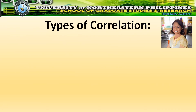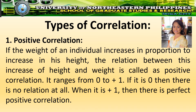What are the types of correlation? First, positive correlation. If the weight of an individual increases in proportion to increase in his height, the relation between this increase of height and weight is called positive correlation. It ranges from zero to positive one. If it is zero, there is no relation at all. When it is positive one, there is perfect positive correlation.